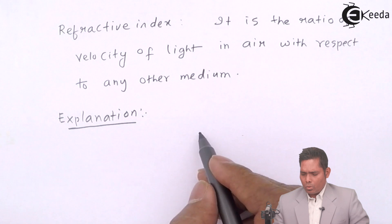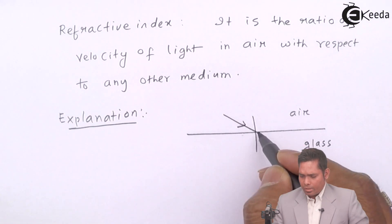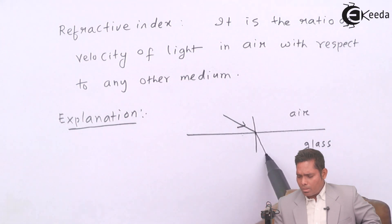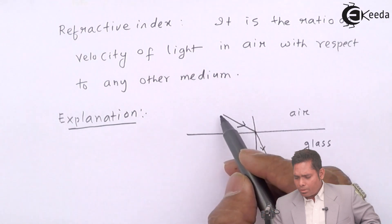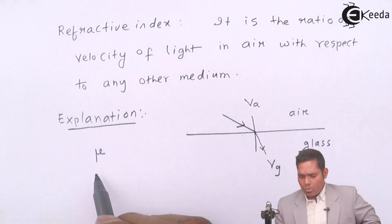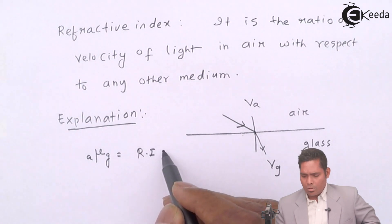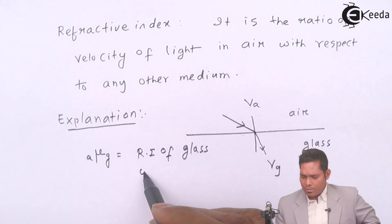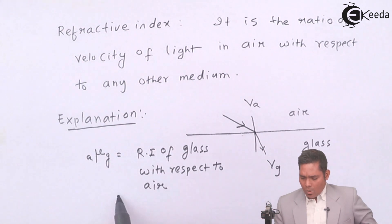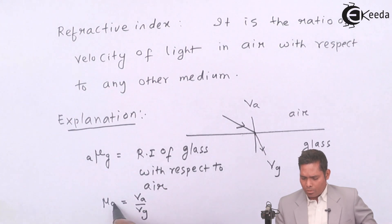Suppose I have two media: one is air and another is glass. Light is incident on the glass surface, and because of refraction it bends towards the normal since glass is denser. The speed of light in air is va and in glass is vg. Then the refractive index, mu of glass with respect to air, equals velocity in air divided by velocity in glass.